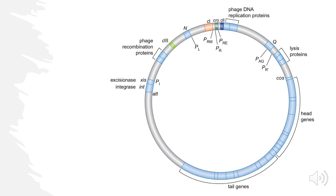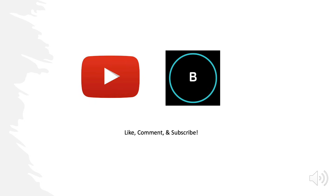Moving to the right side of the genome, we see Q and labeling for lysis proteins, head genes, and tail genes — all lytic cycle components. In the lytic cycle, we exploit the host and make more phages, so we need head genes and tail genes to build new phage heads and tails. The right side of the genome is associated with the lytic cycle. That essentially covers the whole genome.